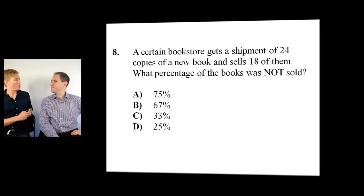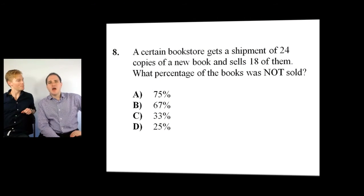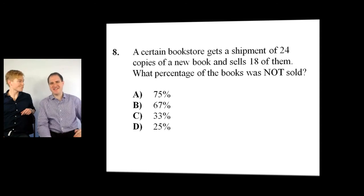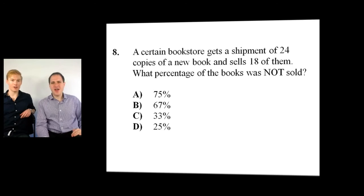So Student Dory, can you read that one for me? A certain bookstore gets a shipment of 24 copies of a new book and sells 18 of them. What percentage of the books was not sold? Oh, this one's easy. Yeah, yeah. Alright, Student Dory, let's do it.